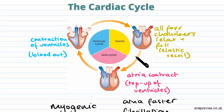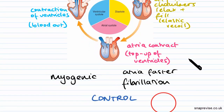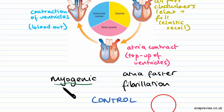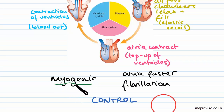You might remember from the previous video that cardiac muscle, which is the muscle found in the heart, is myogenic — meaning it can essentially contract rhythmically by itself. It doesn't necessarily need to be attached to a body.